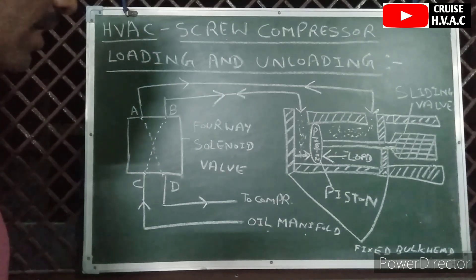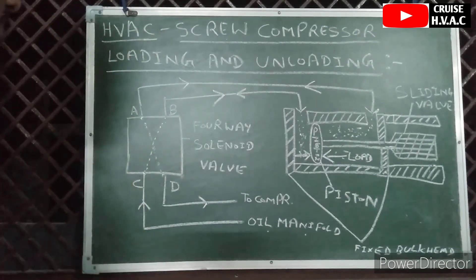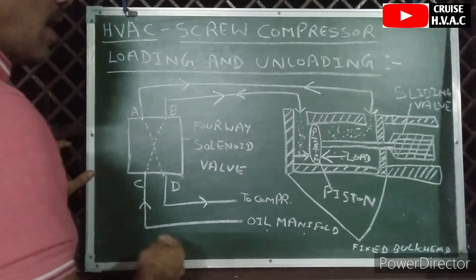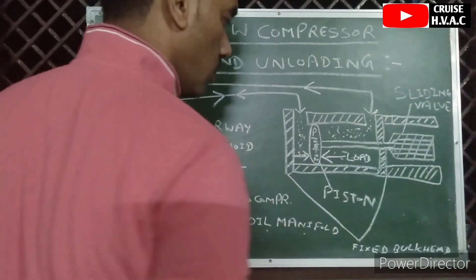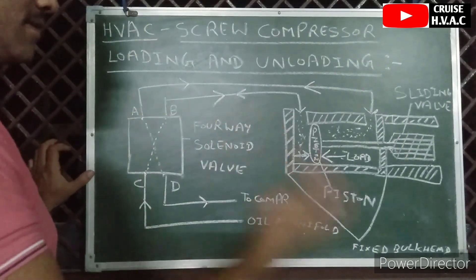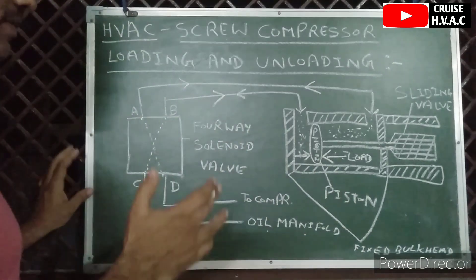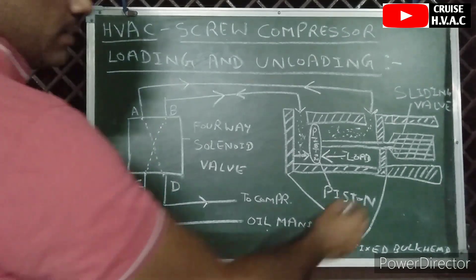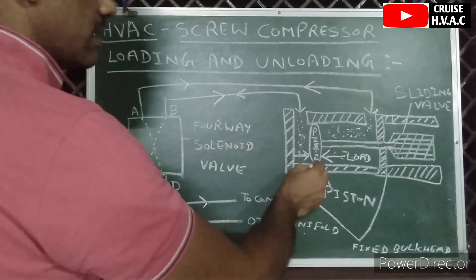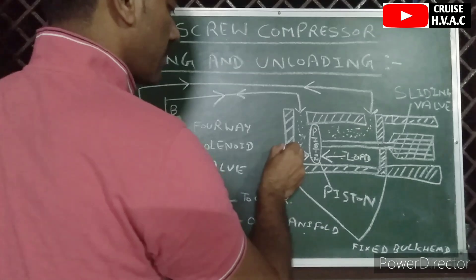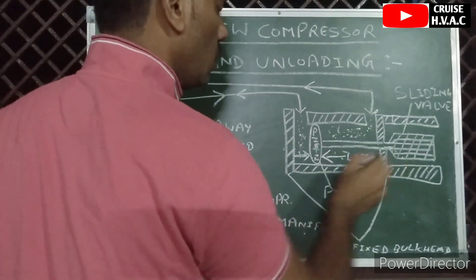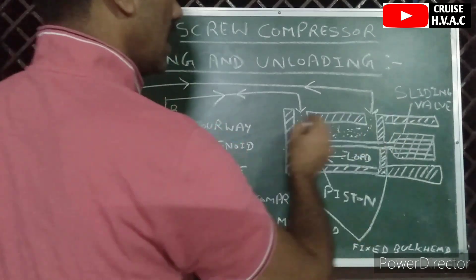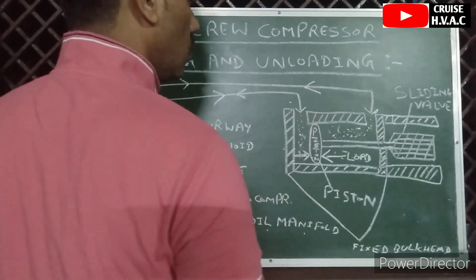So that is a very easy explanation of how the sliding valve works during loading and unloading. To summarize: the main components in the sliding valve assembly are the four-way solenoid valve, the sliding valve itself, the piston, fixed bulkheads number one and number two, oil port one, and oil port two.